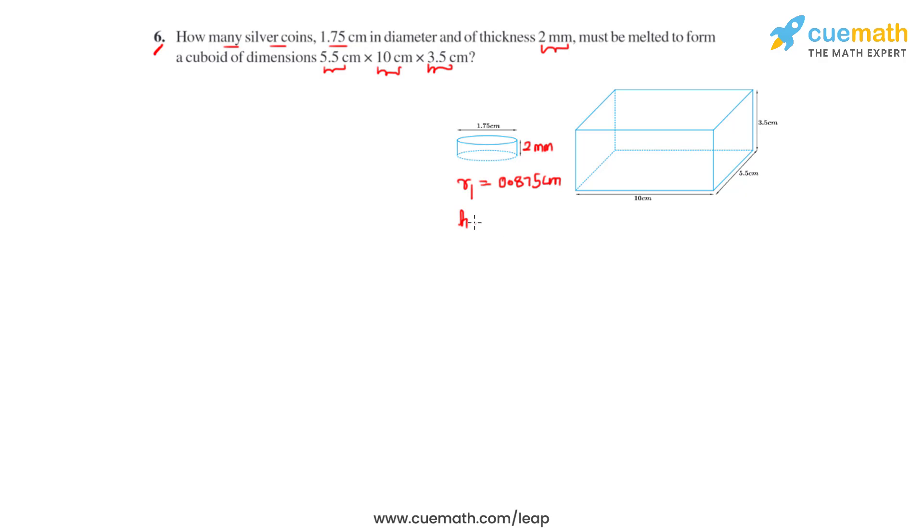The height h1 of the cylindrical coin will be 2 millimeters, but let's convert that into centimeters, so that will be 0.2 centimeters. The cuboid has length 10 centimeters, breadth 5.5 centimeters, and height 3.5 centimeters.